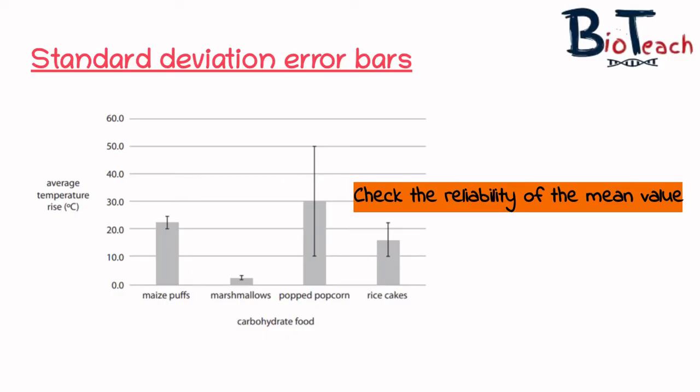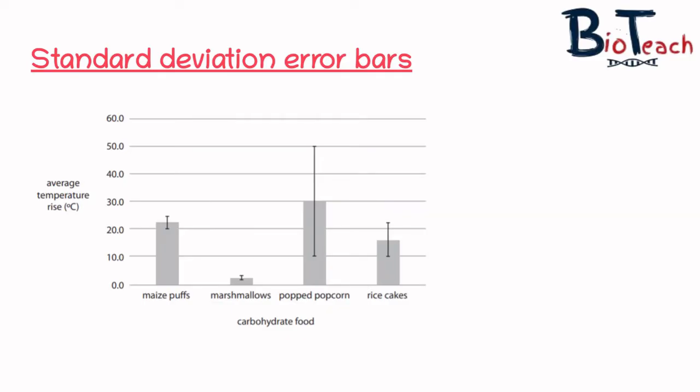In other words, how accurately does your mean value represent the data? The smaller the standard deviation bar, the more reliable the data is. The larger the standard deviation bar, the less reliable it is. It's really important to note that just because you've got a large standard deviation doesn't mean your data is not valid — it basically just means your results or biological measurements are just variable.